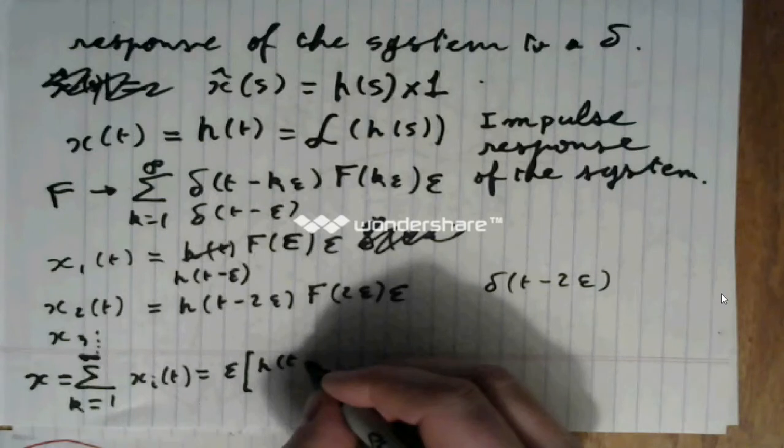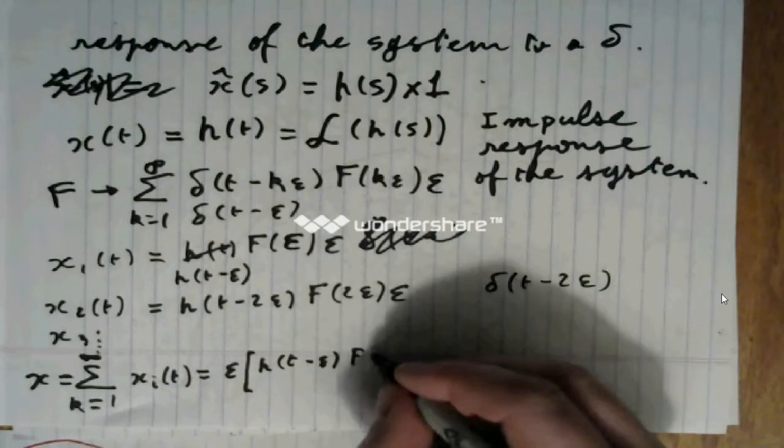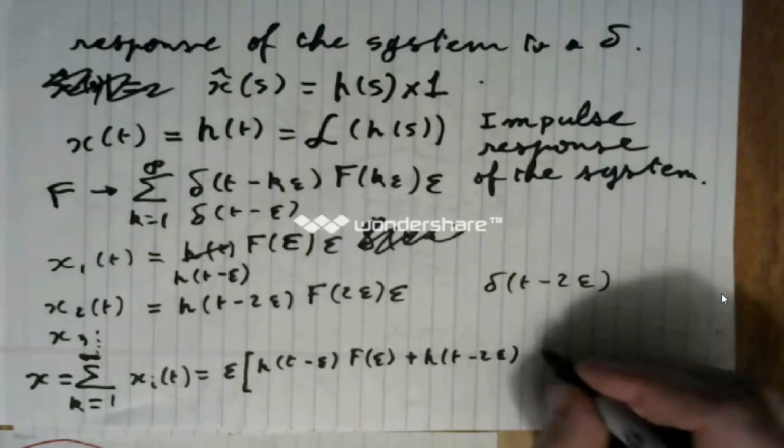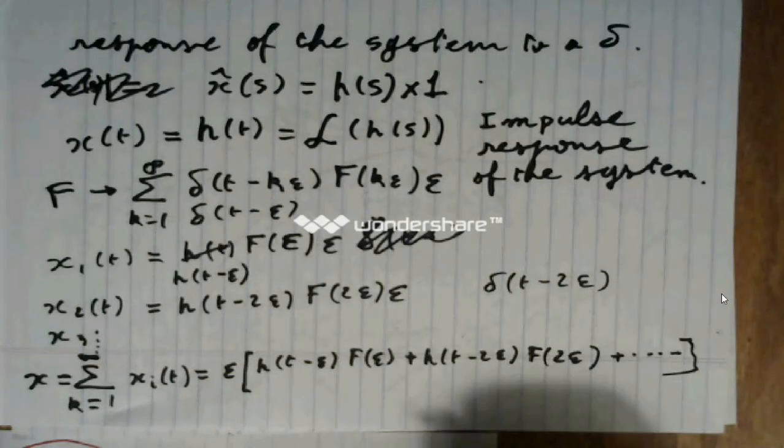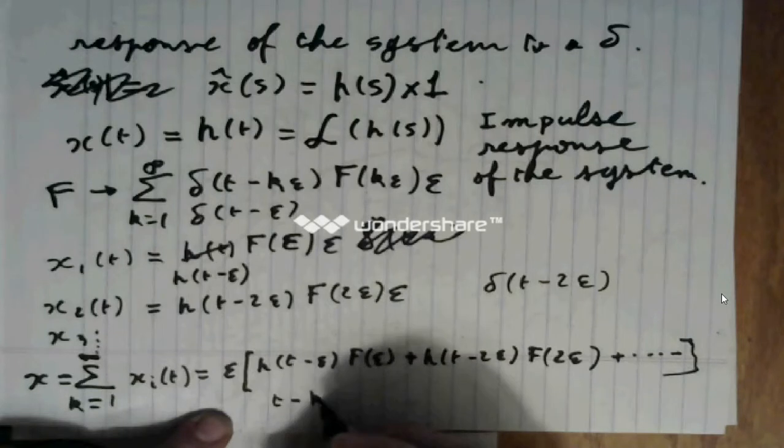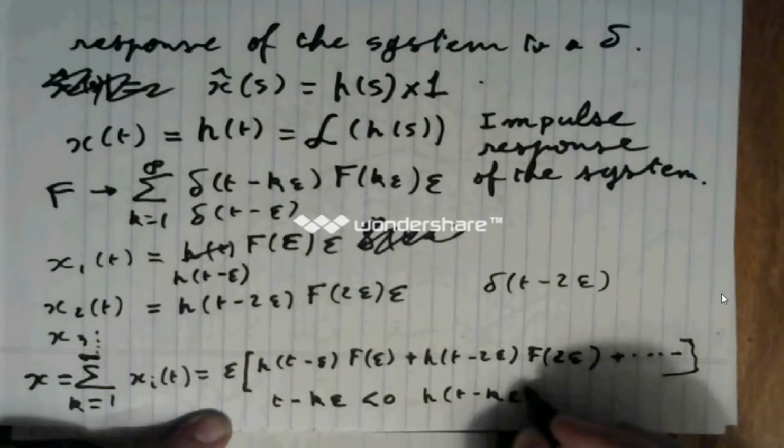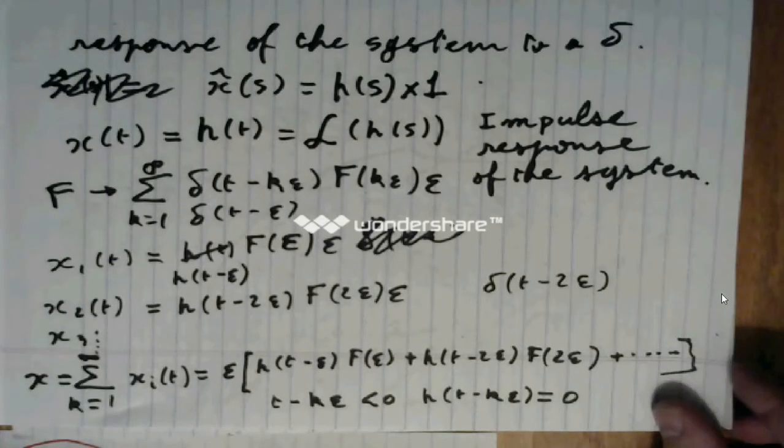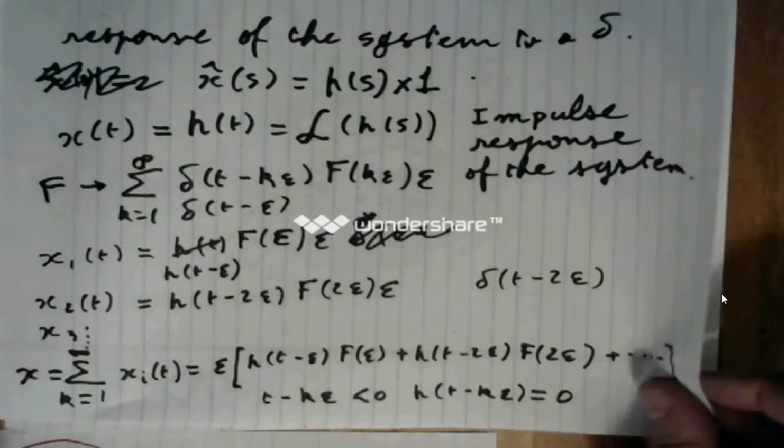And we obtain that it will be h of t minus epsilon times f of epsilon, plus h of t minus 2 epsilon times f of 2 epsilon, plus et cetera, knowing that when t minus k epsilon is less than zero, then h of t minus k epsilon is equal to zero. So, take note of this expression. We are almost finished.